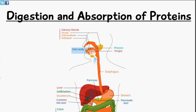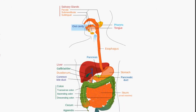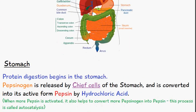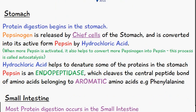Welcome to Five Minute School. In today's video we're going to be discussing the digestion and absorption of proteins. Here we have a simplified image of the digestive system. The food will enter through the mouth, pass through the esophagus, and enter into the stomach. In the stomach, this is where 20% of the protein digestion occurs, and this is where it begins.